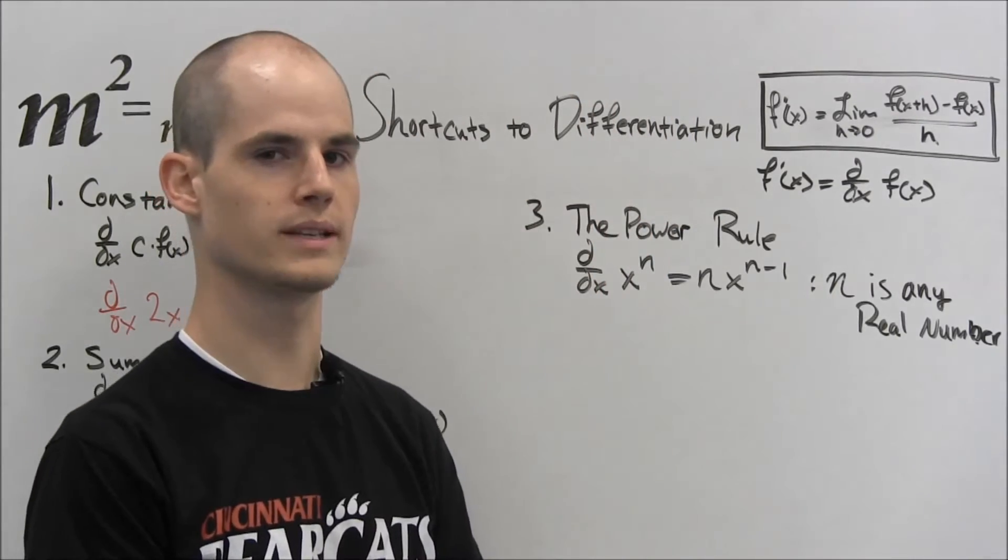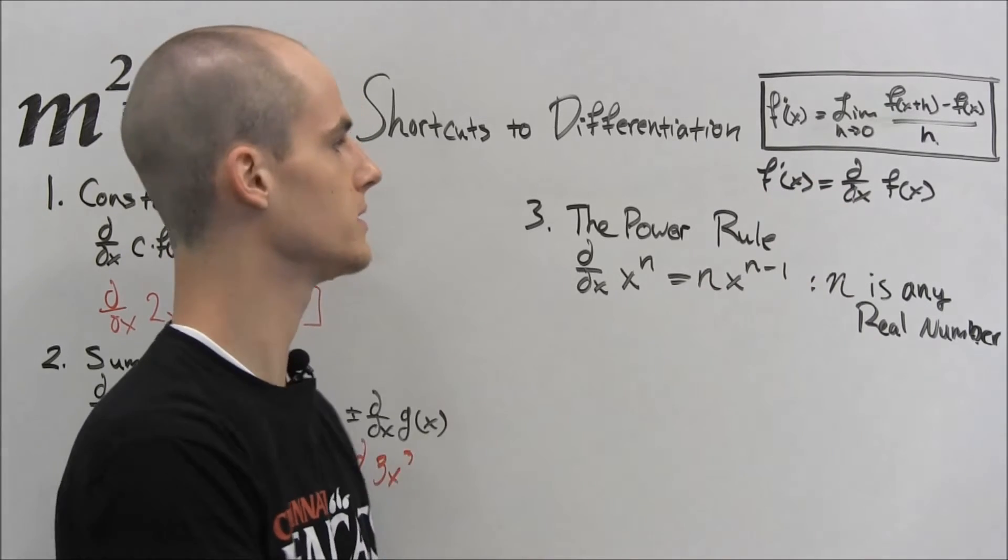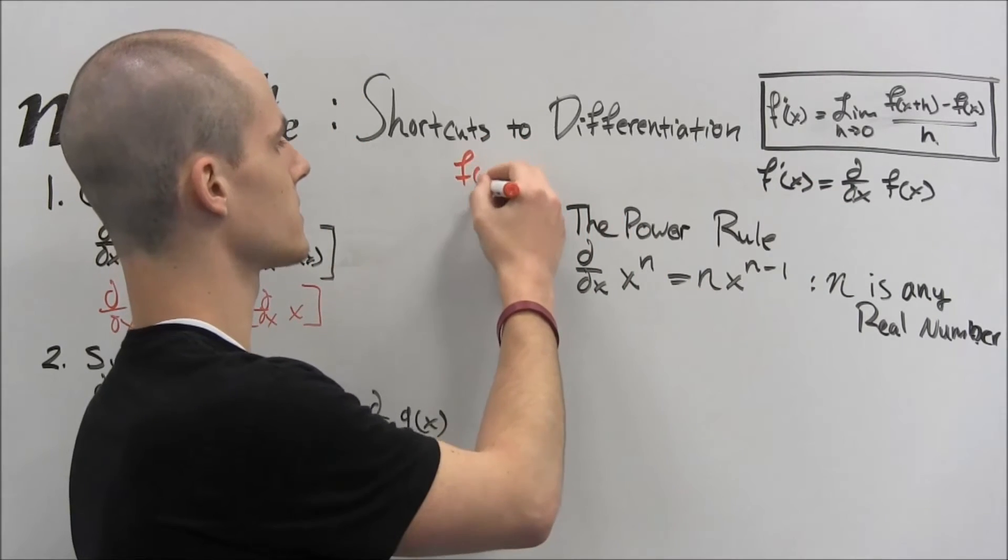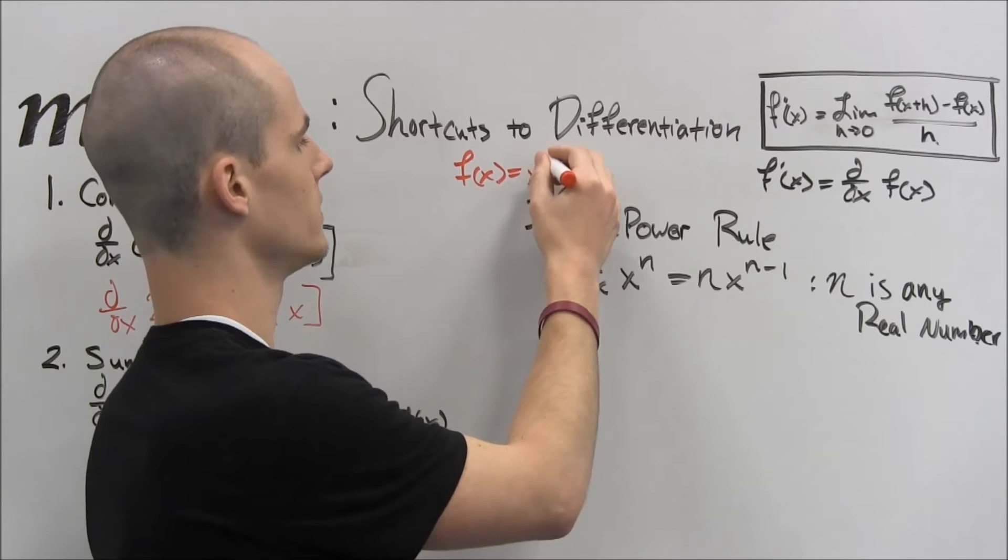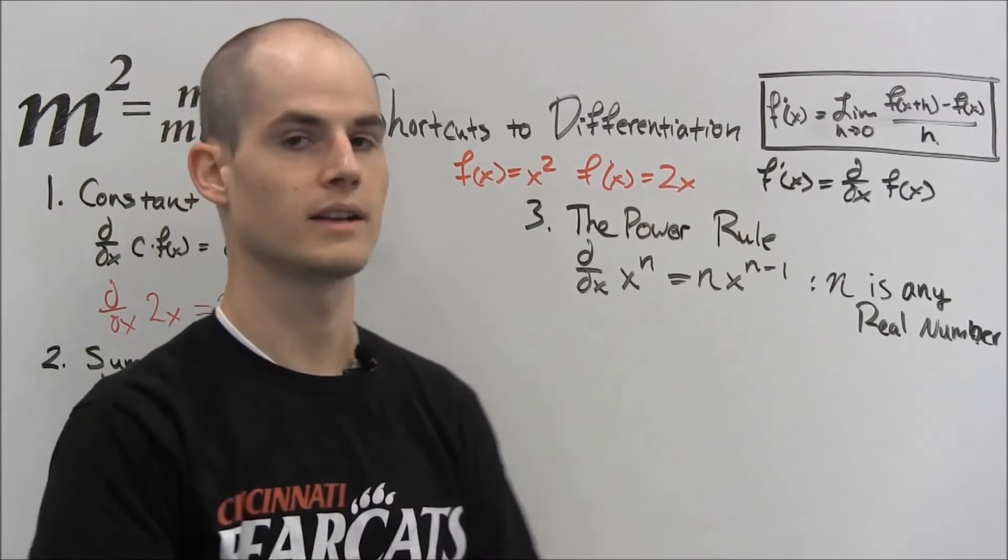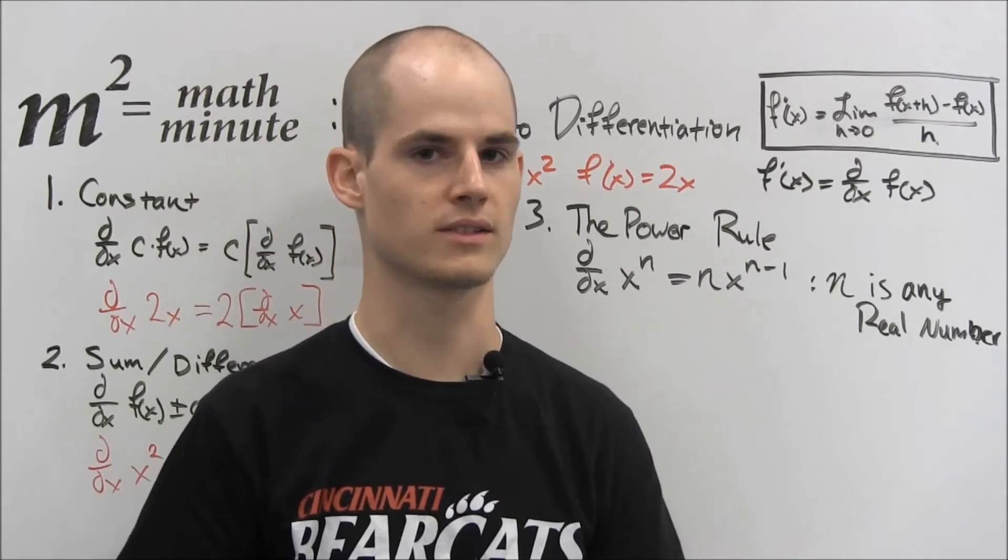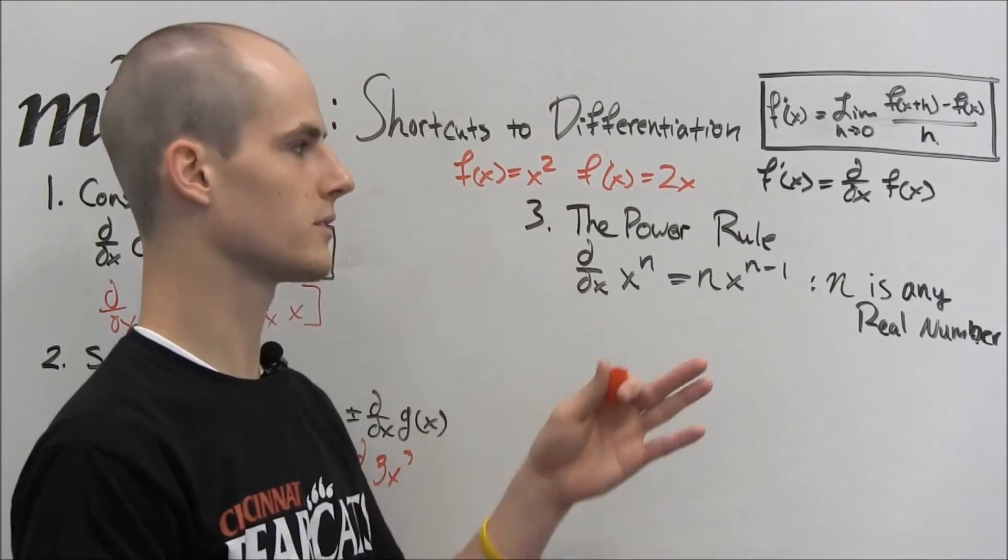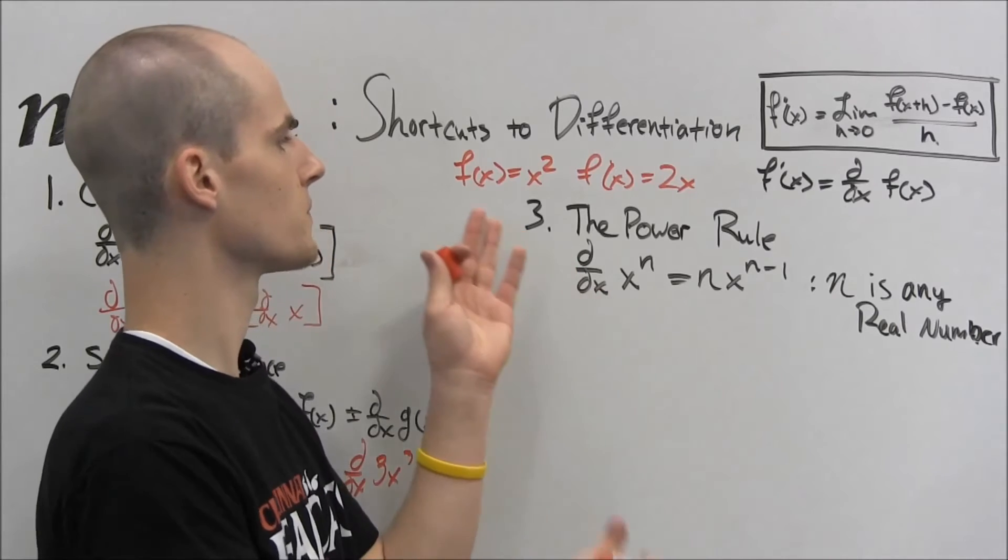So let's just talk about the problem we did last time. I did the long form method to show that if f of x equals x squared, then f prime of x equals 2x. Now if you were wondering how I was able to do that so fast in the first video, not the first video, a couple of videos ago, this is why.